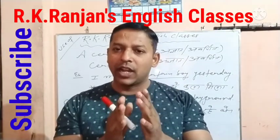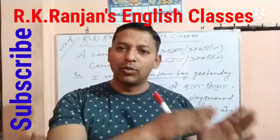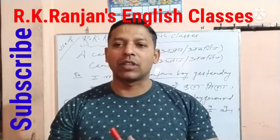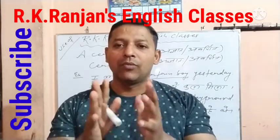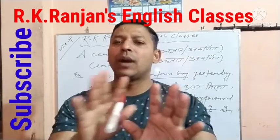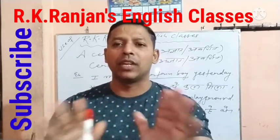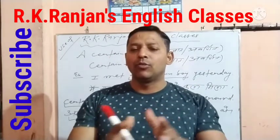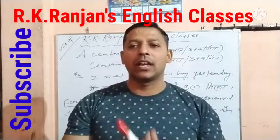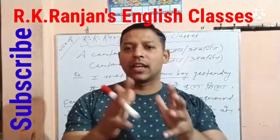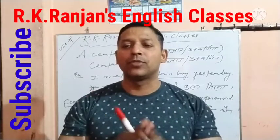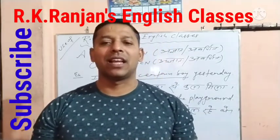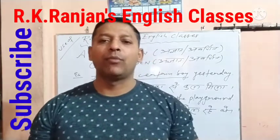'A certain' में 'A' लगा है तो singular countable noun लेंगे। दोनों का हिंदी अर्थ होता है — अज्ञात या अवर्णित। जिसको आप नहीं जानते, उसके बारे में आपको कोई ज्ञान नहीं है — वो अज्ञात है। वो अज्ञात लड़का है, अज्ञात लड़की है, अज्ञात व्यक्ति है — आप उससे परिचित नहीं हैं।